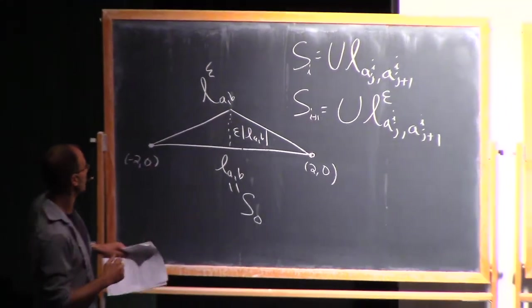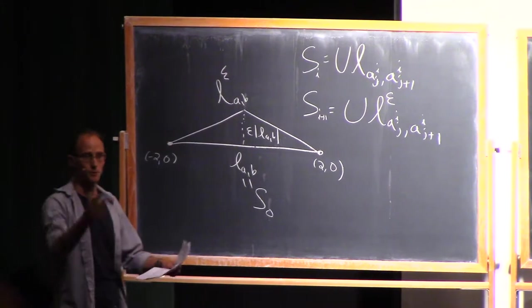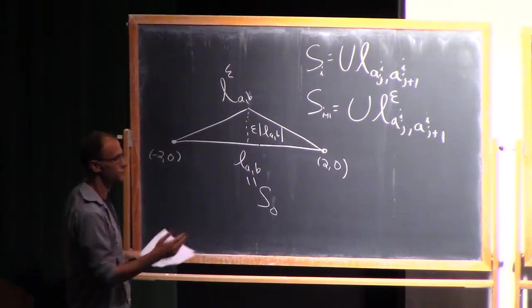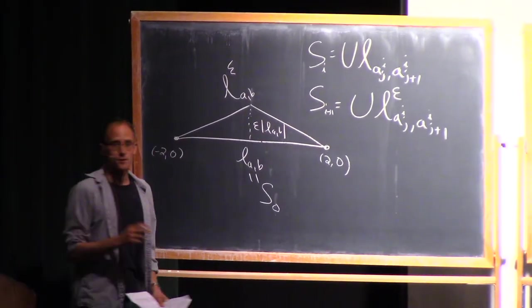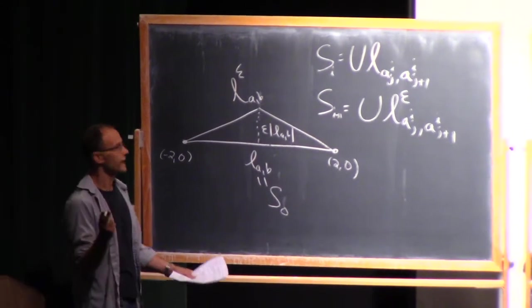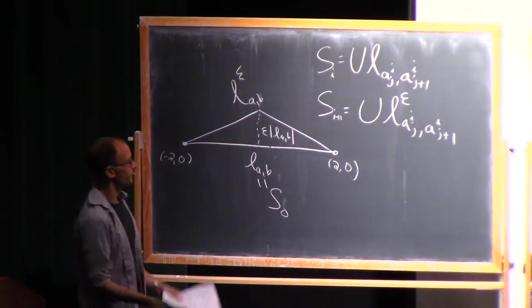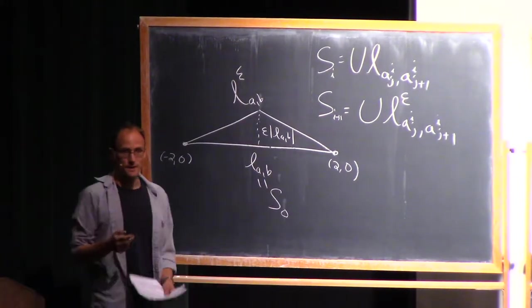And what we said was we got this nice sort of Reifenberg curve in the end that was byholder. And we outlined where the byholder construction was gonna come from. So two points on this. One is that, as was pointed out by several of you, that's not Reifenberg.